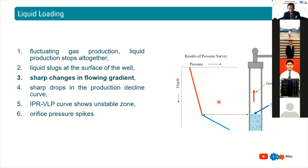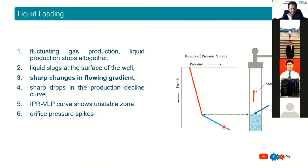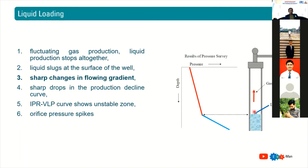Or if you do a flowing pressure gradient survey, you can see a change of the gradient from a low gradient to a high gradient. This is also a symptom of liquid loading, because the low gradient represents the gas zone, whereas the high gradient represents the liquid zone.